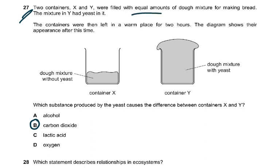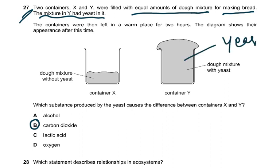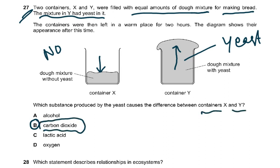Question 27: two containers X and Y were filled with equal amounts of dough mixture for making bread. Mixture Y had yeast in it; X had no yeast. Left in a warm place for two hours — the dough in X has not risen, while the dough in Y has risen and is nearly filling up the beaker. Which substance produced by the yeast caused the difference? It is carbon dioxide bubbling through the dough making it rise. It can't be alcohol, lactic acid, or oxygen — yeast produces CO2 and alcohol, but only CO2 makes the dough rise.